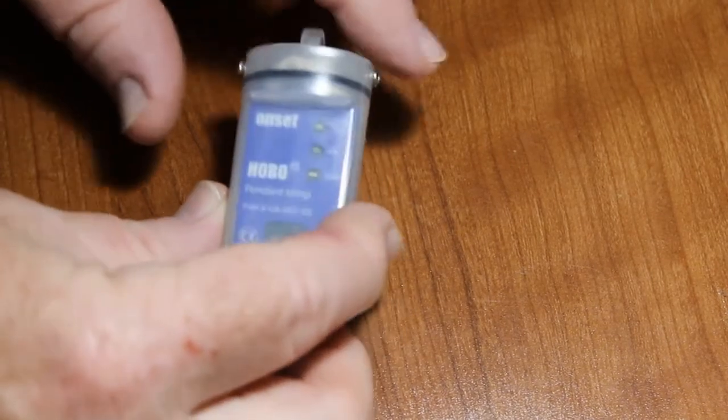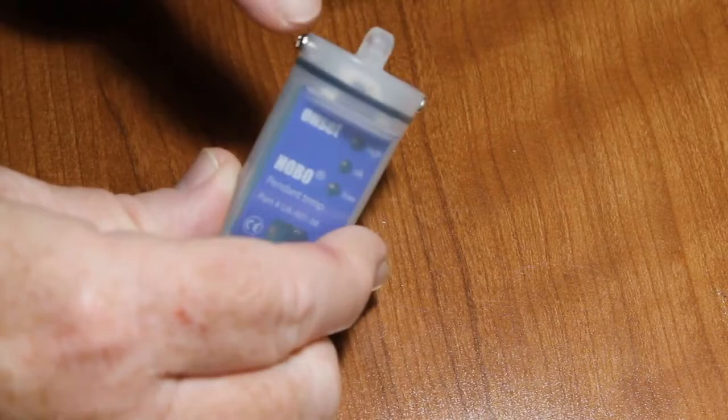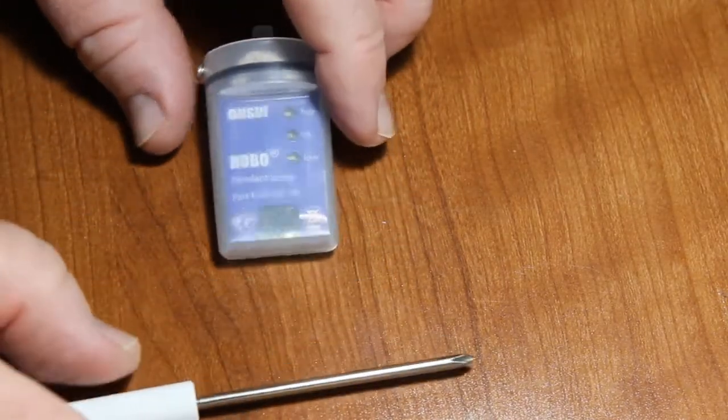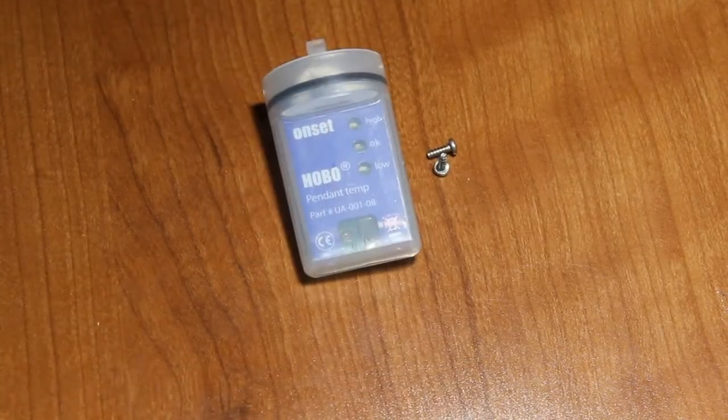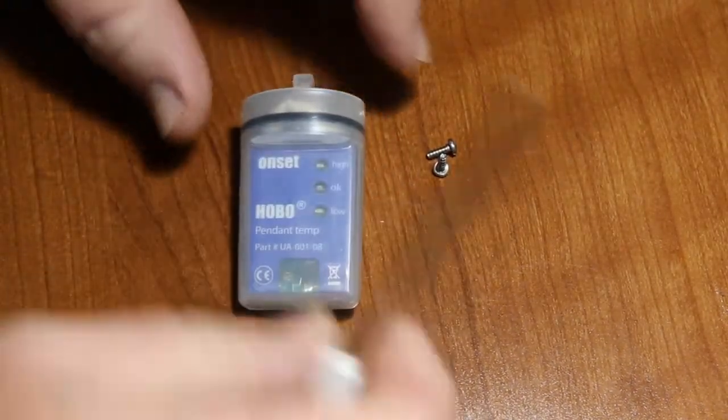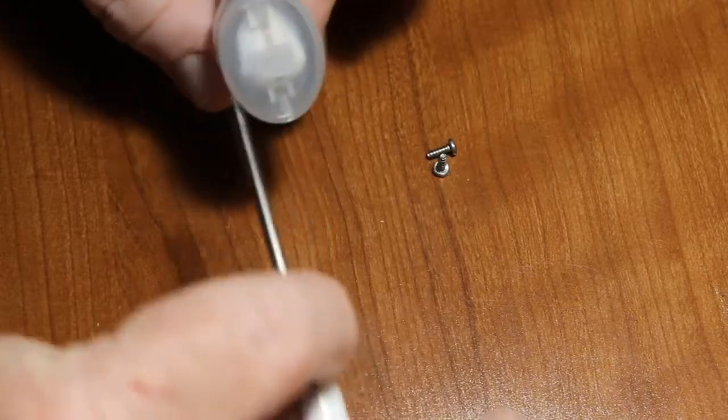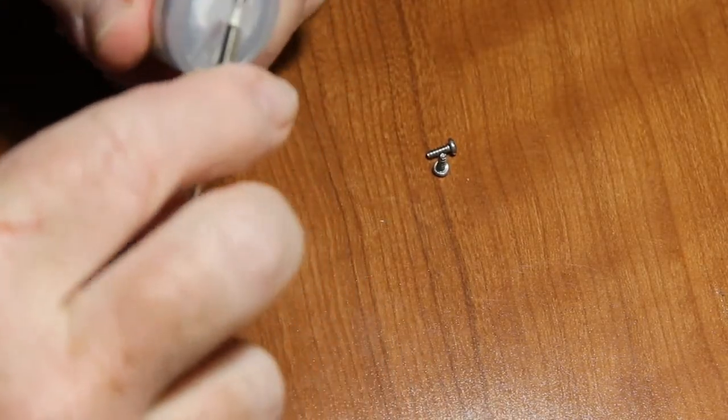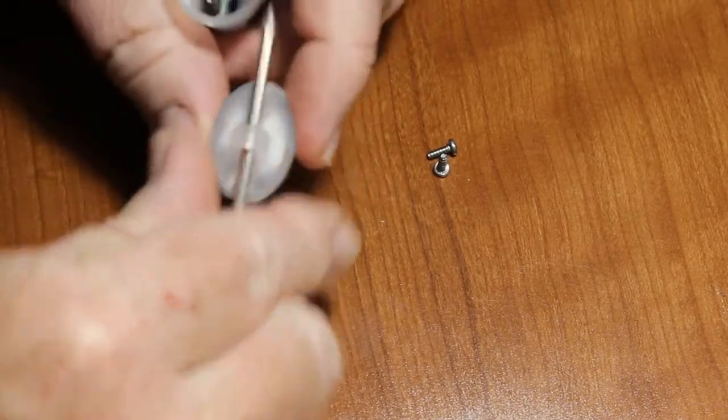So the first thing we are going to do is remove the two screws here, the stainless steel screws. We have our small screwdriver and we will remove those and open the device. We have removed the two stainless steel screws and now we are going to pull the top off. There is an O-ring that seals this. So you have to give it a little bit of a pull and that will come out.